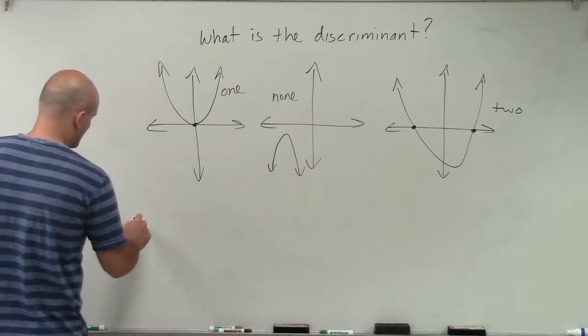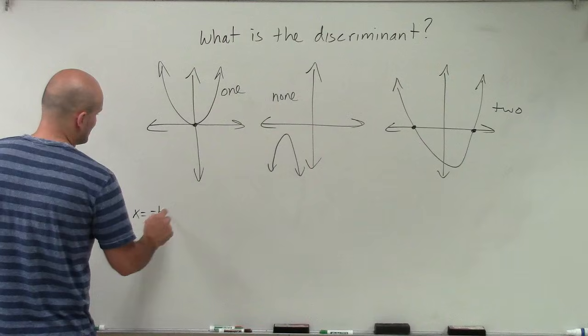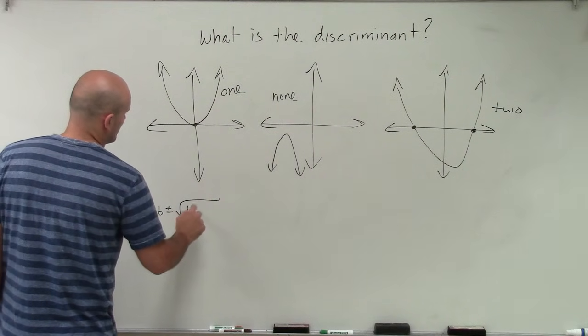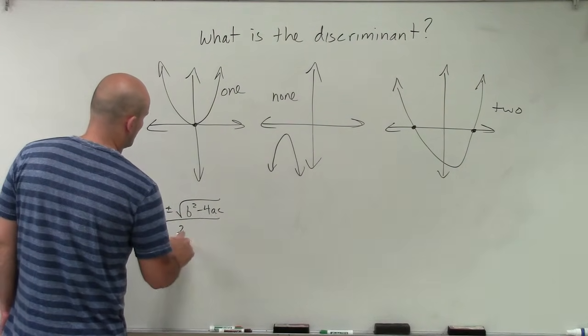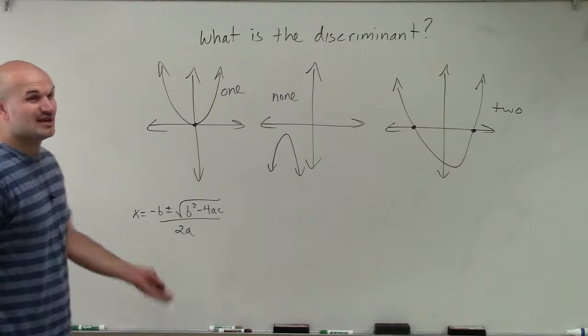So when we look at this quadratic formula, x equals opposite of b plus or minus the square root of b squared minus 4 times a times c, all over 2a. This is a big kind of formula.